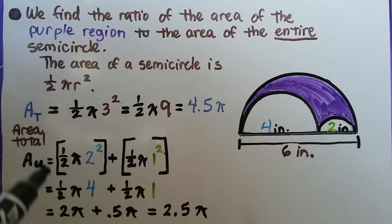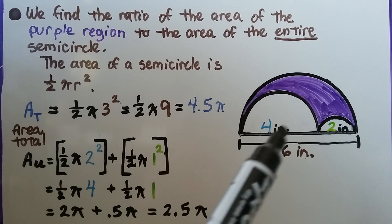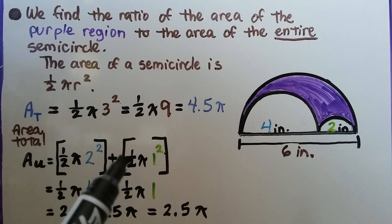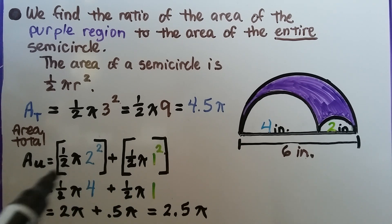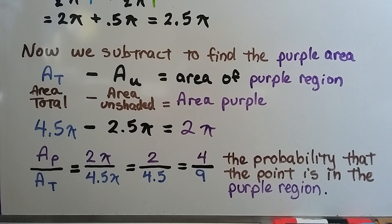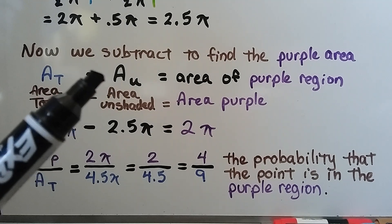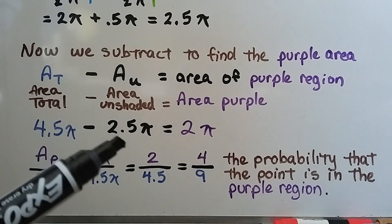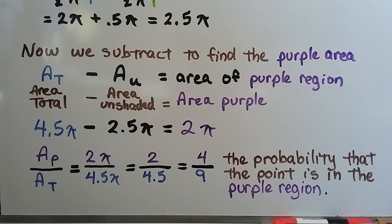The area of the unshaded portion would be half pi times 2 squared, because that's the radius of one semicircle, plus half pi times 1 squared for the other. That gives us half pi times 4 plus half pi times 1, which is 2 pi plus 0.5 pi, totaling 2.5 pi for the unshaded area. Subtracting: the total area minus the unshaded portion equals the purple area — 4.5 pi minus 2.5 pi gives us 2 pi.